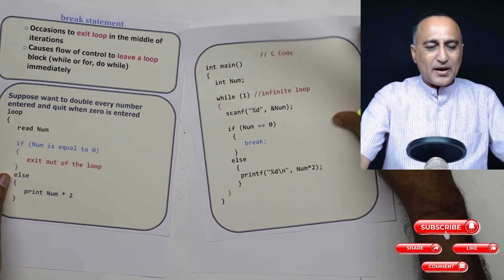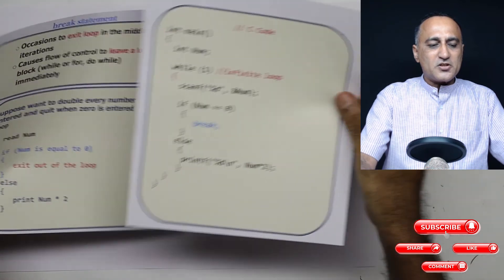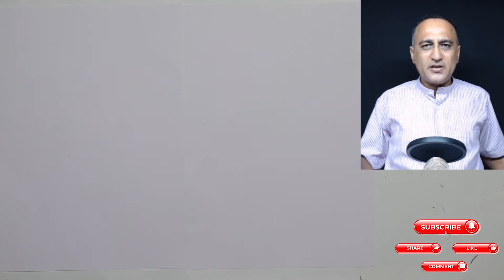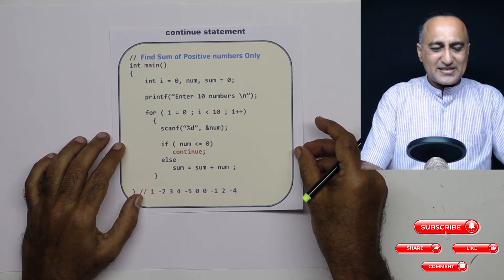Now let's take a look at another control statement which is called as the continue statement which is used along with the control flow statements like while, do while and for. So the best way to take a look at this is through an example.